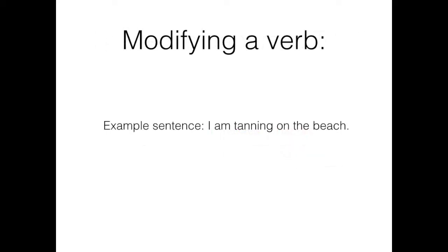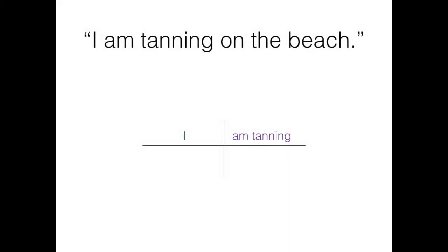I am tanning on the beach. As per usual, we identify our subject and verb. In this case, the verb contains both a helping and main verb, but they go on the same line. On the beach tells me where I am tanning, so we diagram it coming off of tanning. The article the is modifying beach, so we'll be sure to put that in as well.